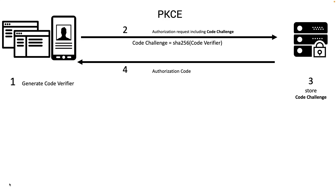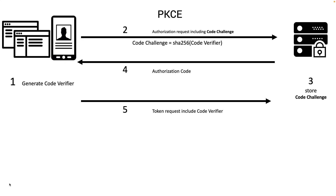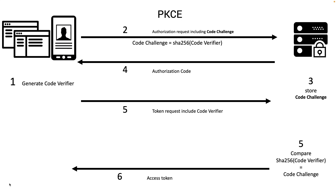You are redirected to the login and authorization prompt, you get authenticated, and consent is given — all good. Then you get the authorization code back. As soon as that is done, you request an access token. The token request includes the code verifier. The authorization server hashes this value the same way the client did — with SHA-256 — then compares it with the code challenge received in the initial request that was already stored. If the hash matches, the server knows the client is the same and the request has not been tampered with along the way.